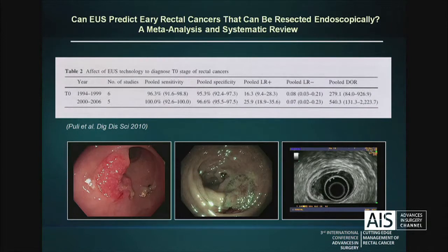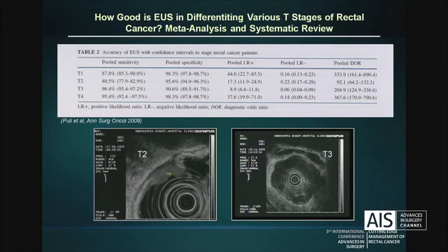How good is EUS in differentiating the T-stages of rectal cancer? These are the results of a meta-analysis published in Annals of Surgical Oncology some years ago. For the different T-stages, sensitivity is between 80 and 95%, whereas specificity is over 90%, and the pooled diagnostic odds ratio is also very high. For T2 it is a little lower — T2 is the most difficult stage to assess, at least for EUS in all kinds of cancers.